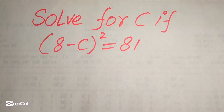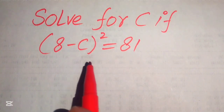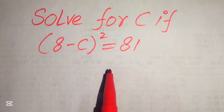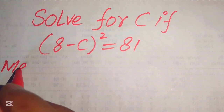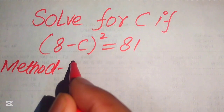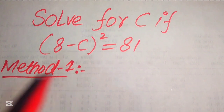Hello everyone. Today I want to show you how to solve this problem for the values of C, if we have (8 minus C) whole square equals 81. We solve this problem using two methods. I hope you like both of these methods, but if you have another method in mind, please don't hesitate to write it in the comments section.